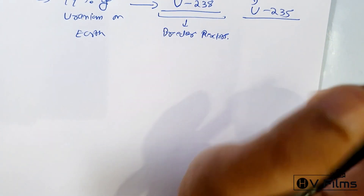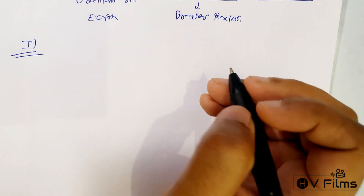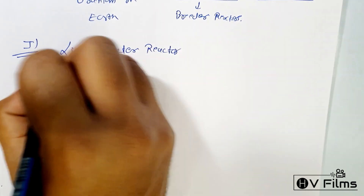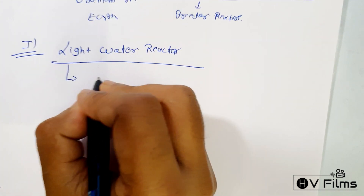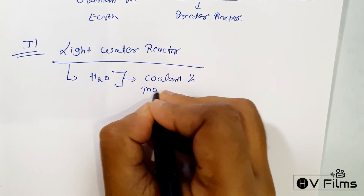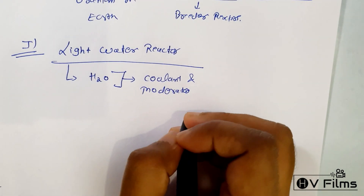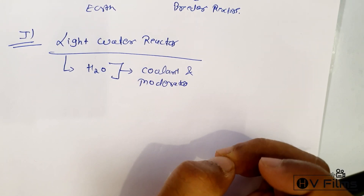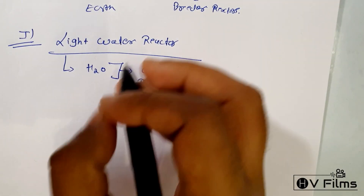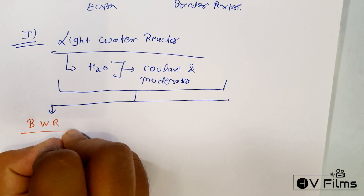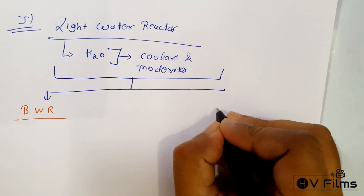There are different types of fission reactors. The first is the light water reactor. As the name implies, it uses water (H₂O) as both coolant and moderator. These reactors require the use of enriched fuel, and depending on the technology employed, they are further divided into the boiling water reactor (BWR) and the pressurized water reactor (PWR).